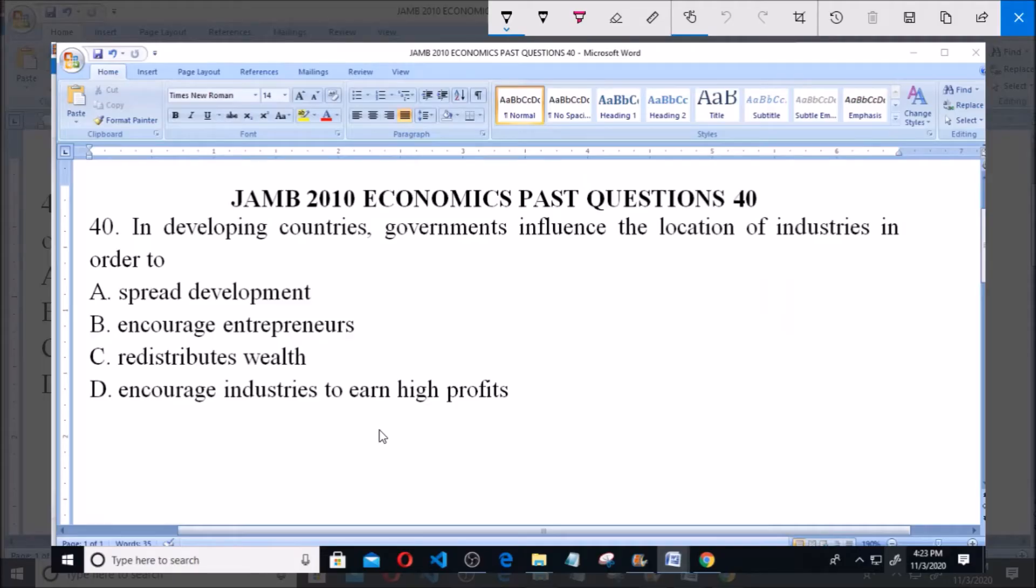The JAMB 2010 economics past question, question 14: In developing countries, governments influence the location of industries in order to. Option A says to spread development. Option B says encourage entrepreneurs.